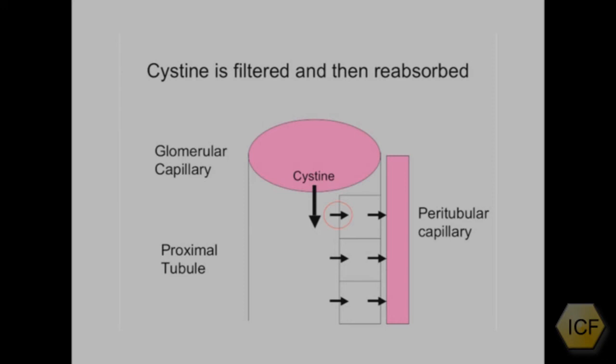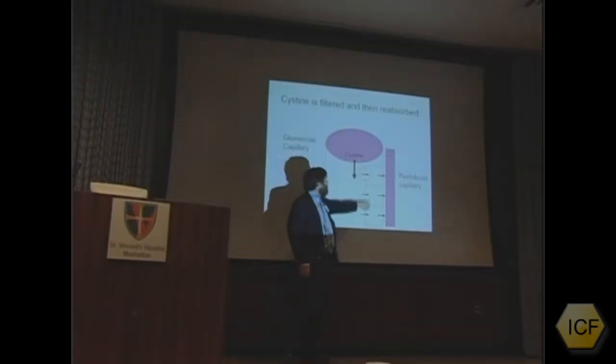The peritubular capillary is the blood that's running next to those tubules. When the tubule reabsorbs cystine and sodium and potassium and all of those other things that are in the blood, it's going to move through the cells of the proximal tubule and into the blood, into the peritubular capillary.